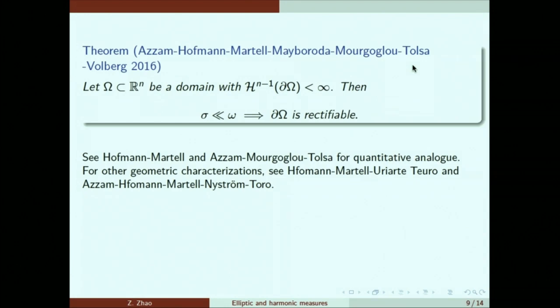People also study this problem from the other point of view. So suppose we have nice behavior of the harmonic measure, then what can we say about the property of the boundary? It turns out that if we have this behavior, then the boundary is rectifiable. You can think of it as countable union of C1 manifold or a Lipschitz graph, depending on where you come from.